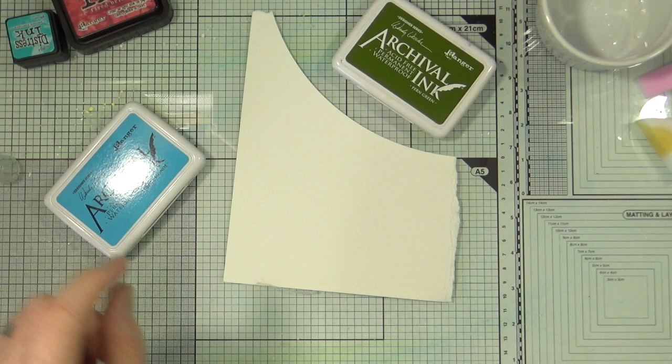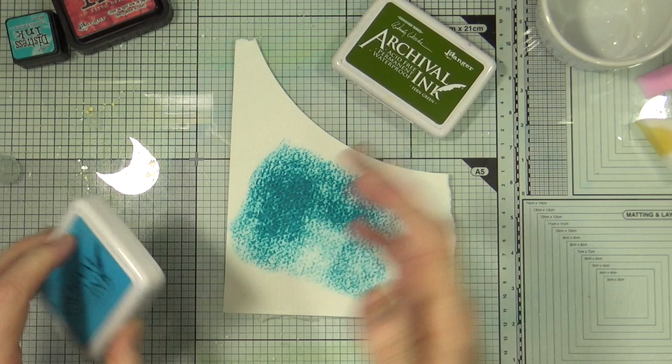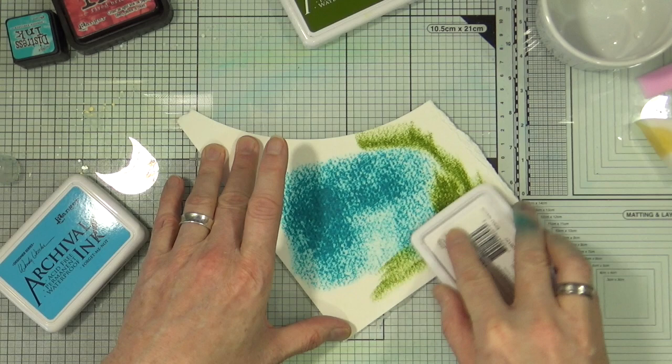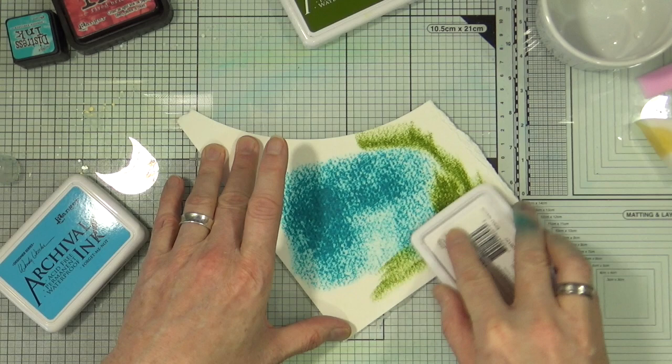So I've thrown the other piece off. Let's just do it straight onto the watercolour card. Now the archival ink, obviously, is permanent when dry. That one doesn't want to stay where it is.